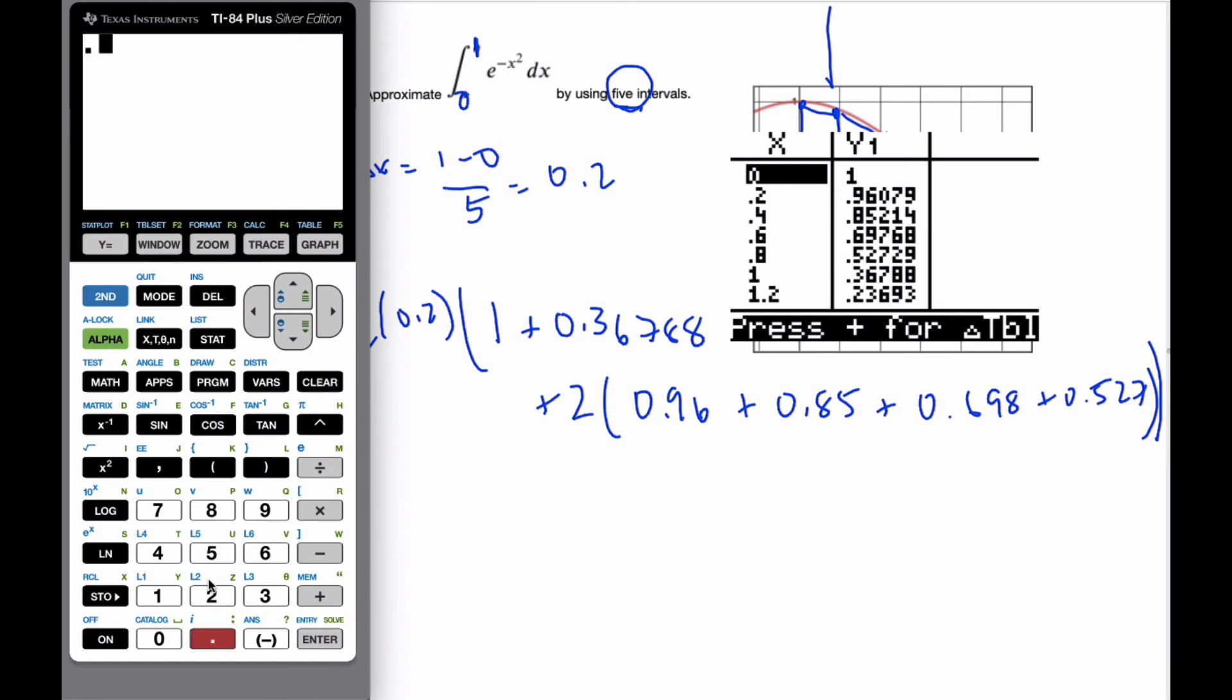0.5 times 0.2, open parenthesis, 1 plus 0.36788 plus 2, open parenthesis, 0.960789 plus 0.85214 plus 0.69768 plus 0.52729.